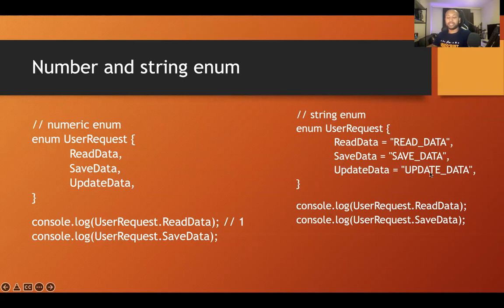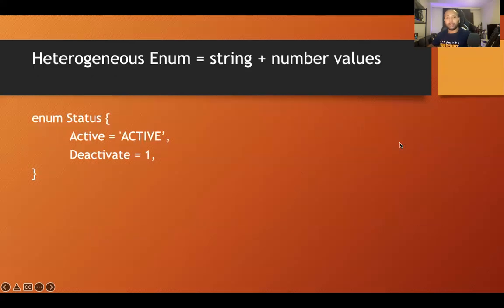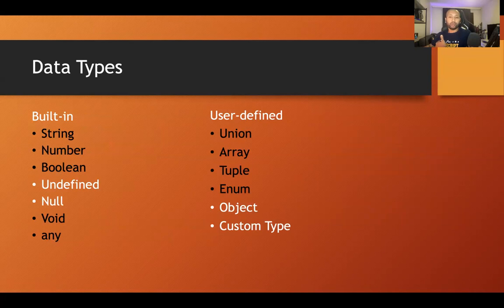For a string enum, assign string values: 'ReadData = "read data"', 'SaveData = "save data"', and so on. When you access 'UserRequest.ReadData' it returns that string. Heterogeneous enum combines strings and numbers in the same enum. Using enums for constants saves time, avoids typos, and you access values with the dot operator. Hopefully that explains enums clearly. Next we'll move to object and custom types, then jump into Visual Studio Code to see everything in practice.